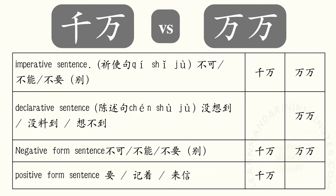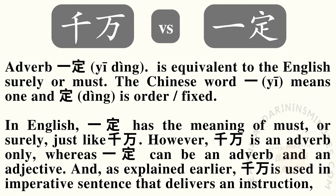In order to use 千万 and 万万 correctly, remember the following rules. When forming an imperative sentence using 不可, 不能, 不要, or 别, you can use both 千万 and 万万. For declarative sentences using 没想到, 没料到, or 想不到, you can only use 万万. For negative form sentences you can use 千万 or 万万. For positive form sentences you can only use 千万. Adverb 一定 is equivalent to the English 'surely' or 'must.' The Chinese word 一 means one and 定 means order or fixed.